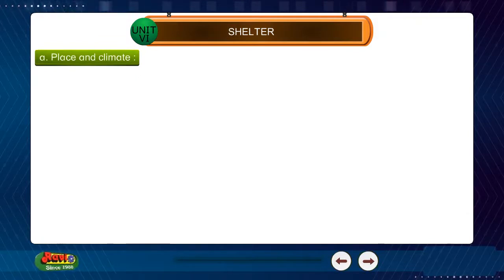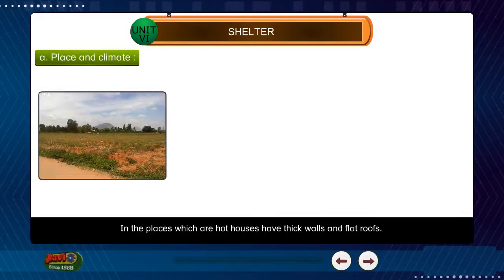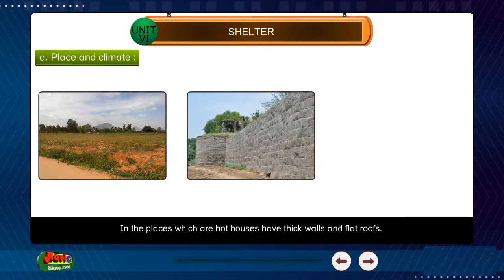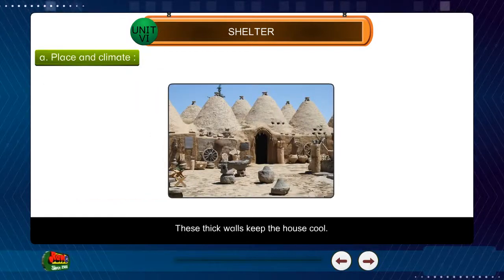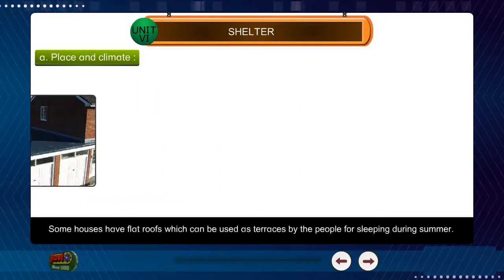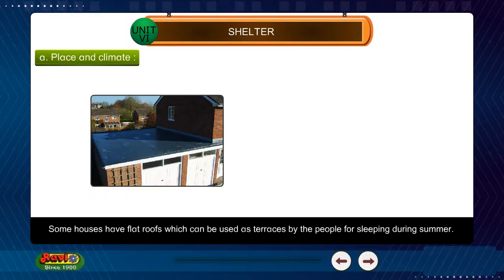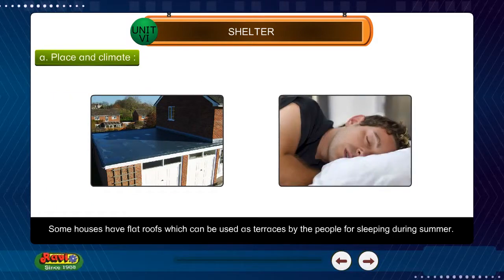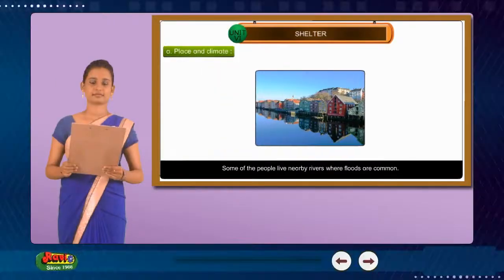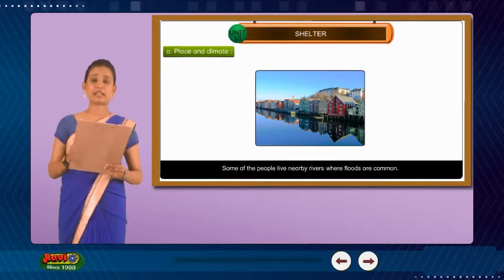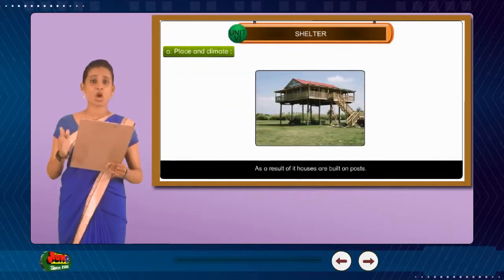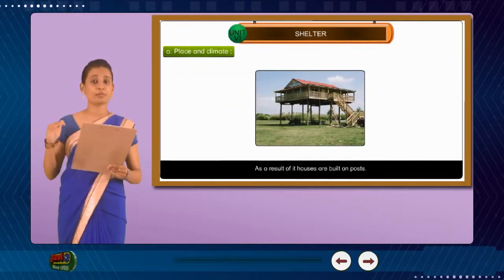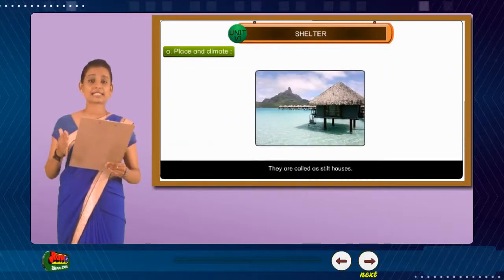Place and Climate: In places which are hot, houses have thick walls and flat roofs. These thick walls keep the house cool. Some houses have flat roofs which can be used as terraces for sleeping during summer. Some people live near rivers where floods are common. As a result, houses are built on posts. They are called stilt houses.